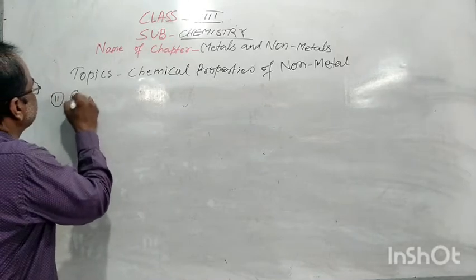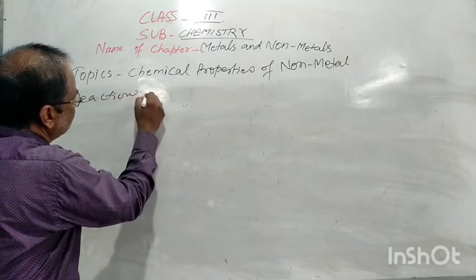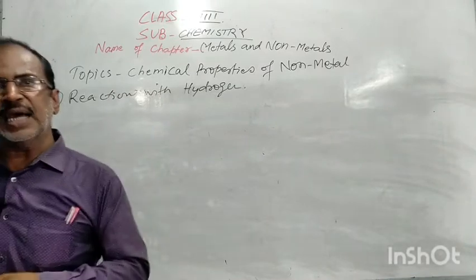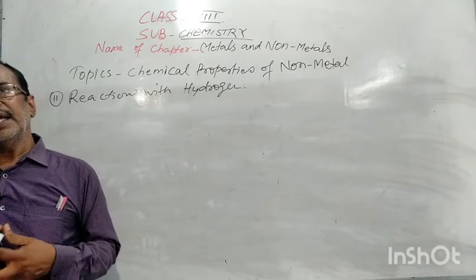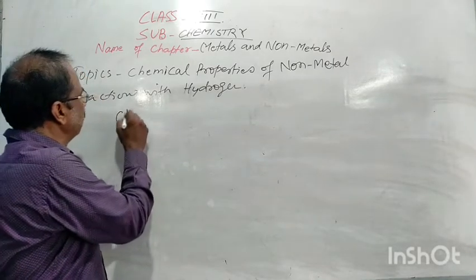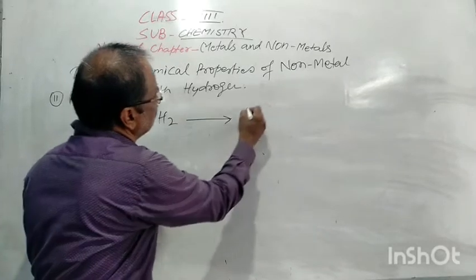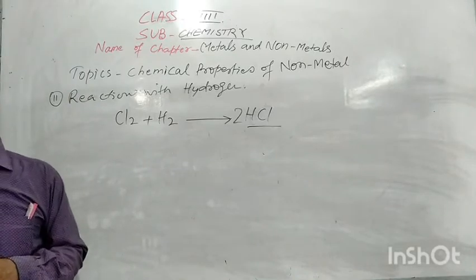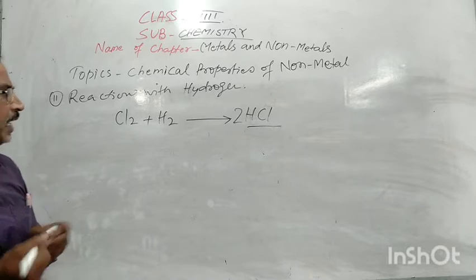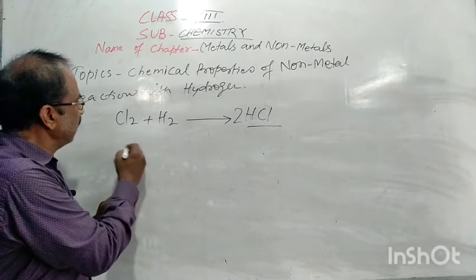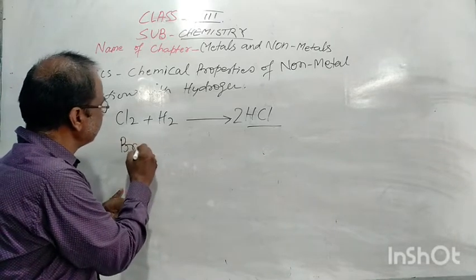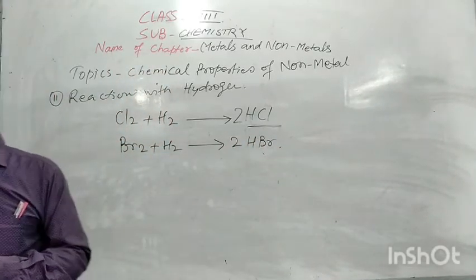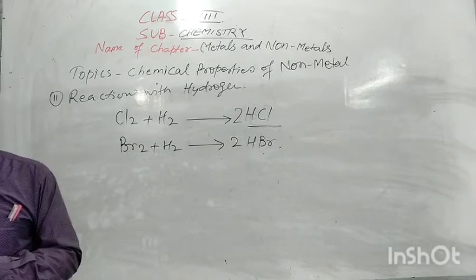Second reaction of non-metals: reaction with hydrogen. When a non-metal reacts with hydrogen, it gives acid formation. For example, chlorine plus hydrogen gives hydrogen chloride (HCl), also known as hydrochloric acid. So non-metal reacting with hydrogen forms an acid.